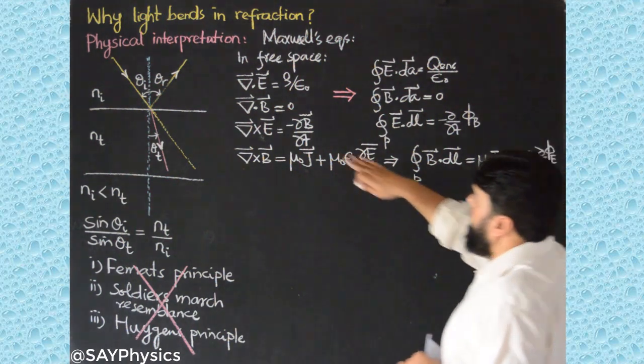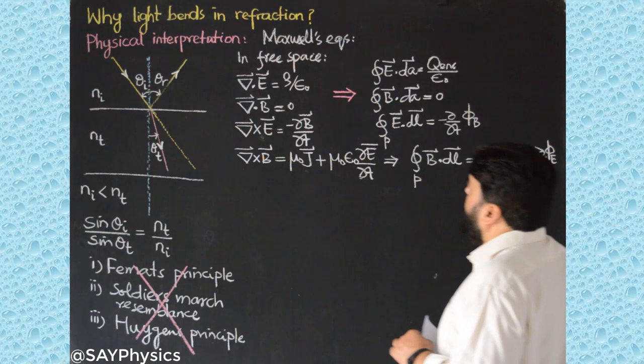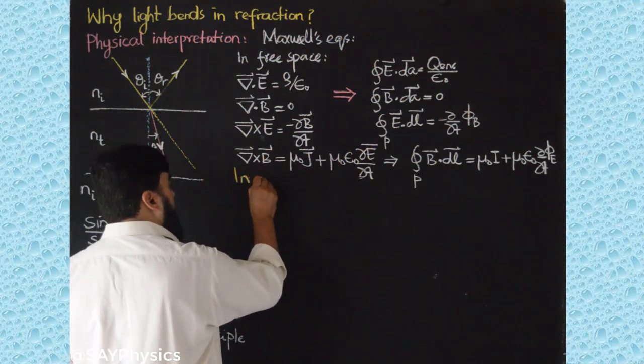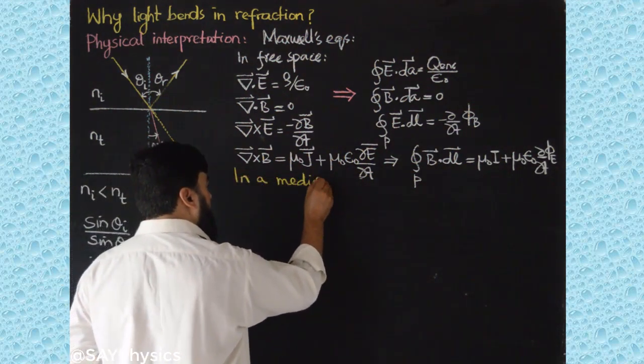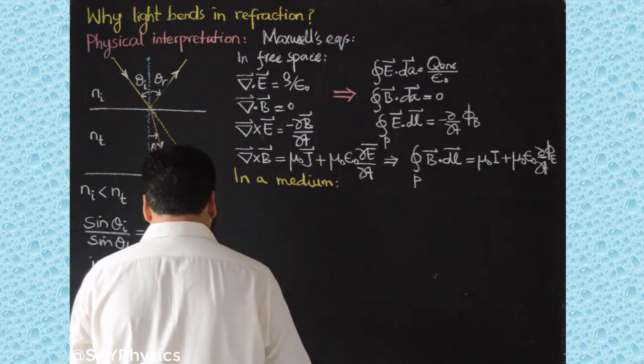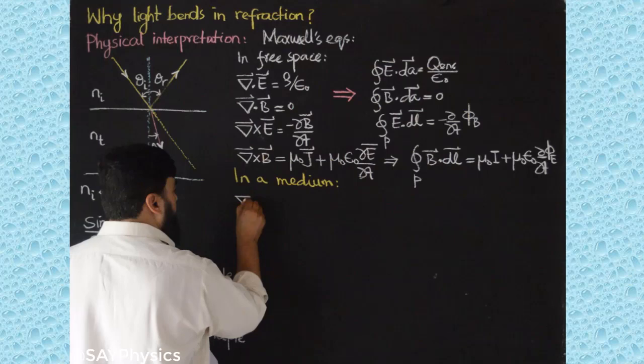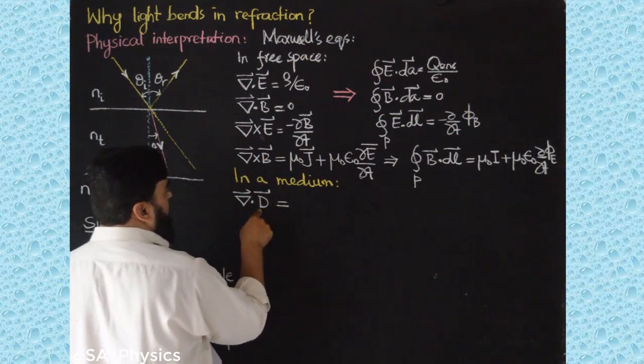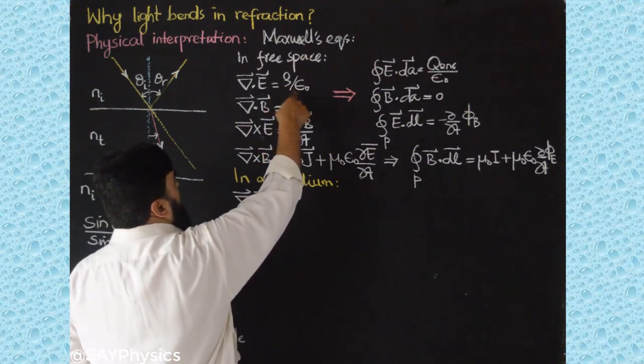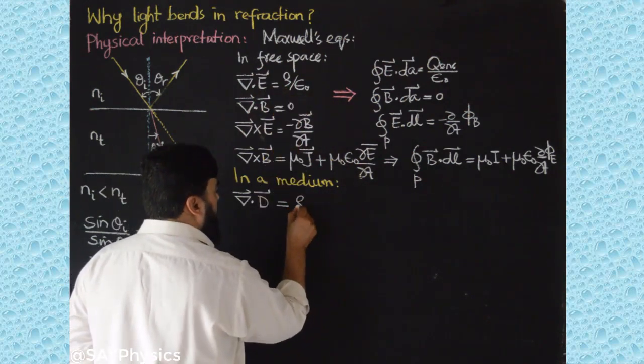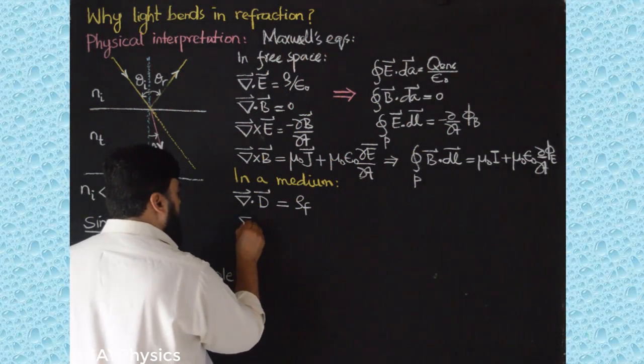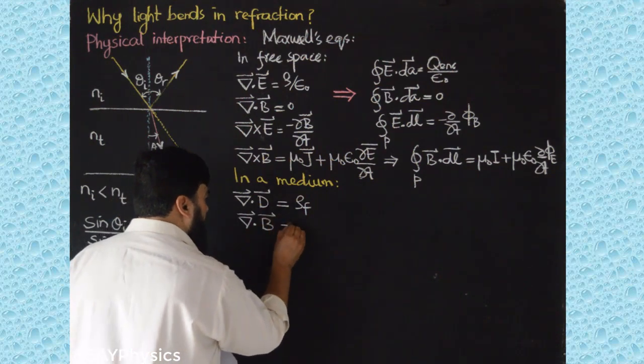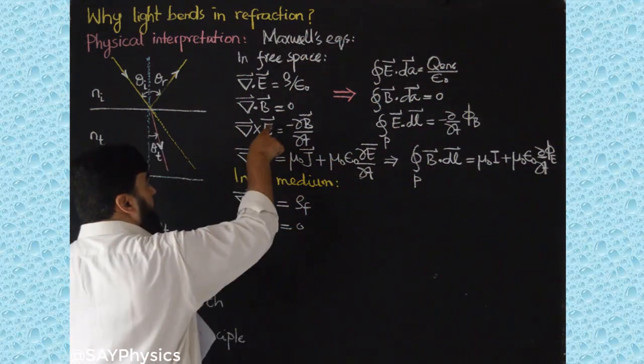When we consider a medium, we are having the set of Maxwell equations is the divergence of now electric field will be replaced with the electric displacement D, epsilon_0 will be removed and rho will be replaced by free charges. Similarly, the divergence of magnetic field will be equal to zero as usual. The third equation will not be changed.